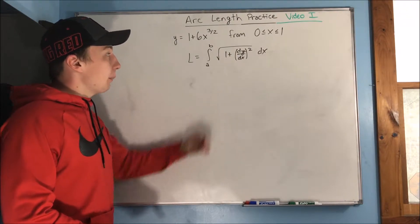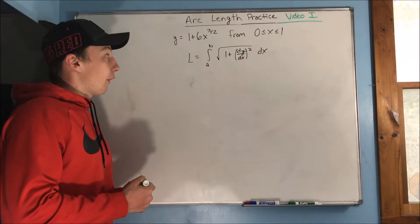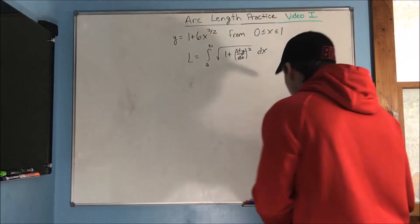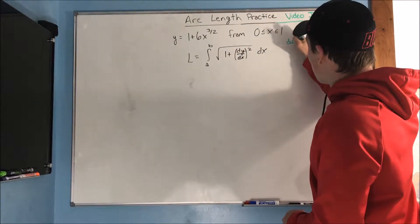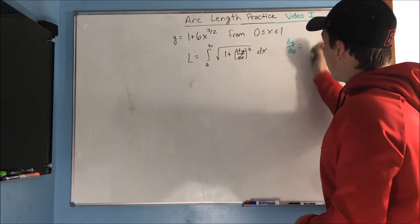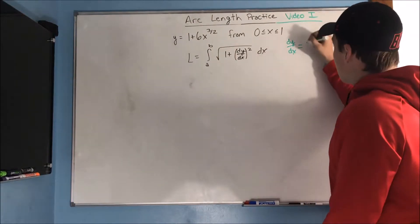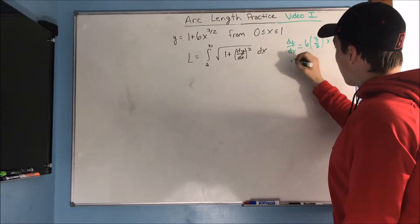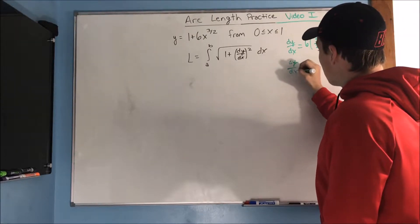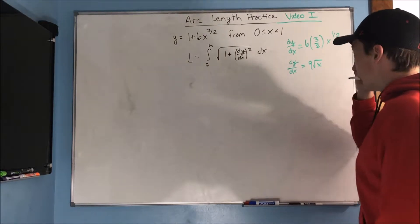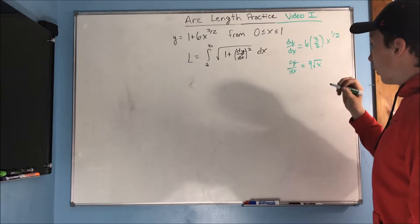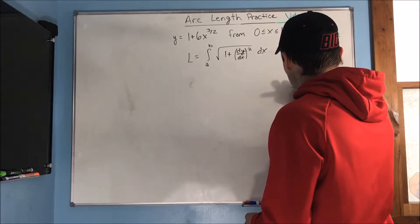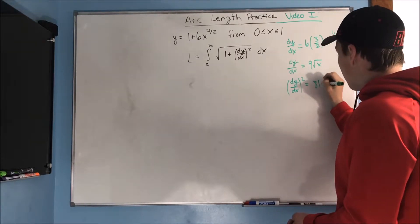So what do we do? Well, the first thing we should do is probably just find our dy dx squared. So dy dx, what is that? We take our derivative here, the 1 goes away, and we get 6 times 3 halves, x to the 1 half, and that simplifies down to 9 rad x. So now we need to find what that is squared, and that should seem rather obvious. That is 81x.